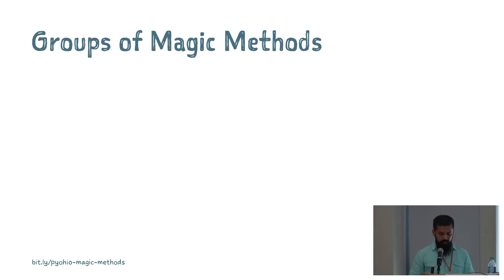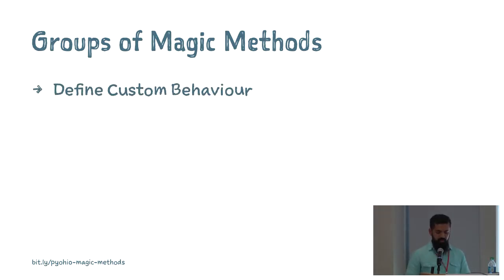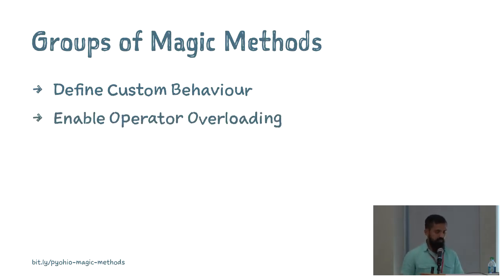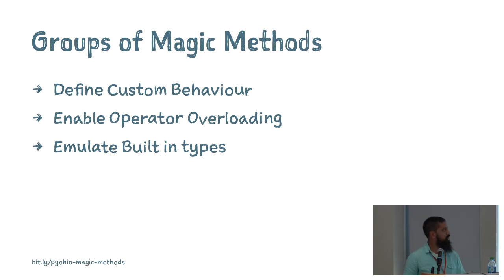We will be going over three groups of magic methods. The first is magic methods that let you define custom behavior — such as computing the hash of an object or returning a printable representation. The next group enables operator overloading, defining how your object interacts with the addition sign or equality checks. The final group lets you emulate built-in types — iterating over objects, slicing, indexing, or offering dictionary-like behavior with keys and values.